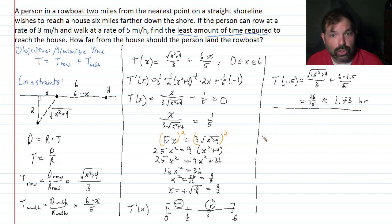How far from the house should the person land the boat? How far from the house? Well, how far from the house? That's this distance right here. And so answering that, we should land 4.5 miles from the house. 6 minus x. 6 minus 1.5, 4.5 miles.